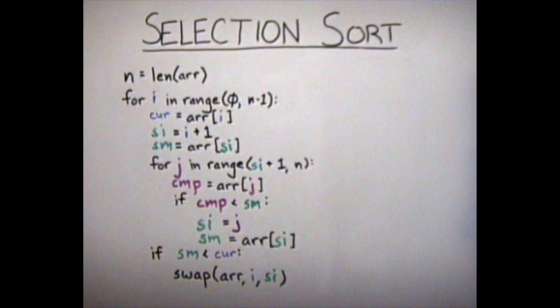And the variables j and comp are used in order to find the smallest value and point the green pen, or the value si, at the correct index.